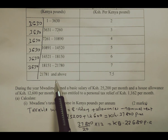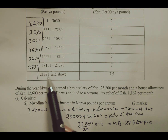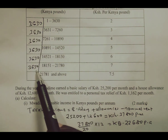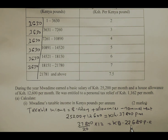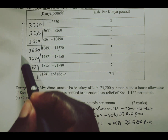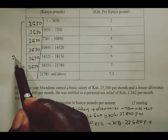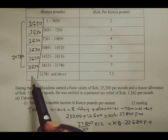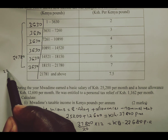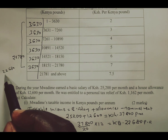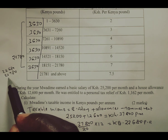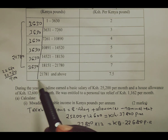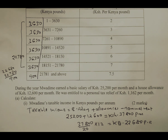For the final bracket, to get the amount we tax there, we add all previous bracket amounts — which total 21,780 — then subtract from 22,680. So 22,680 minus 21,780 gives us exactly 900. That is the amount we are going to tax in the last bracket.